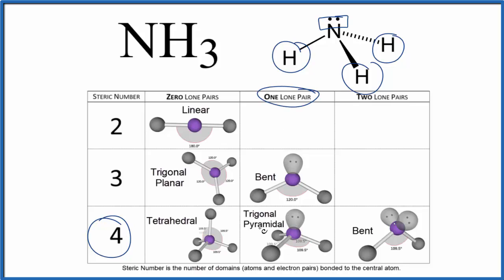We go down. We go over. We have what's called a trigonal pyramidal molecular geometry. And the ideal bond angle is 109.5 degrees.